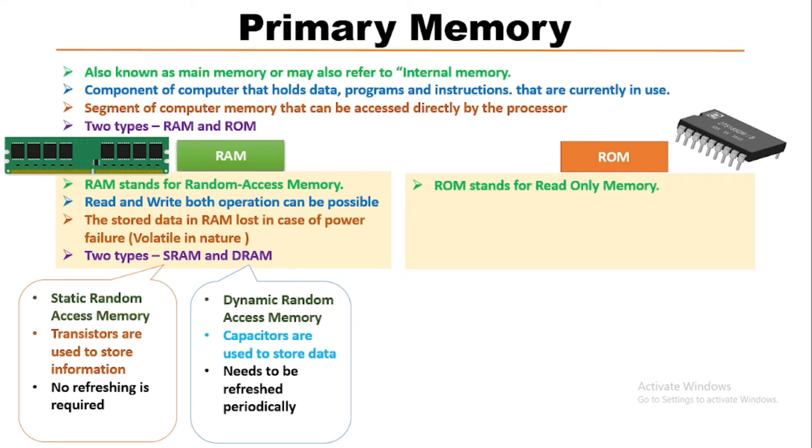Here, only read operations are possible. It's non-volatile in nature because data is retained in ROM even if the power is turned off. There are mainly three categories: PROM, EPROM, and EEPROM.